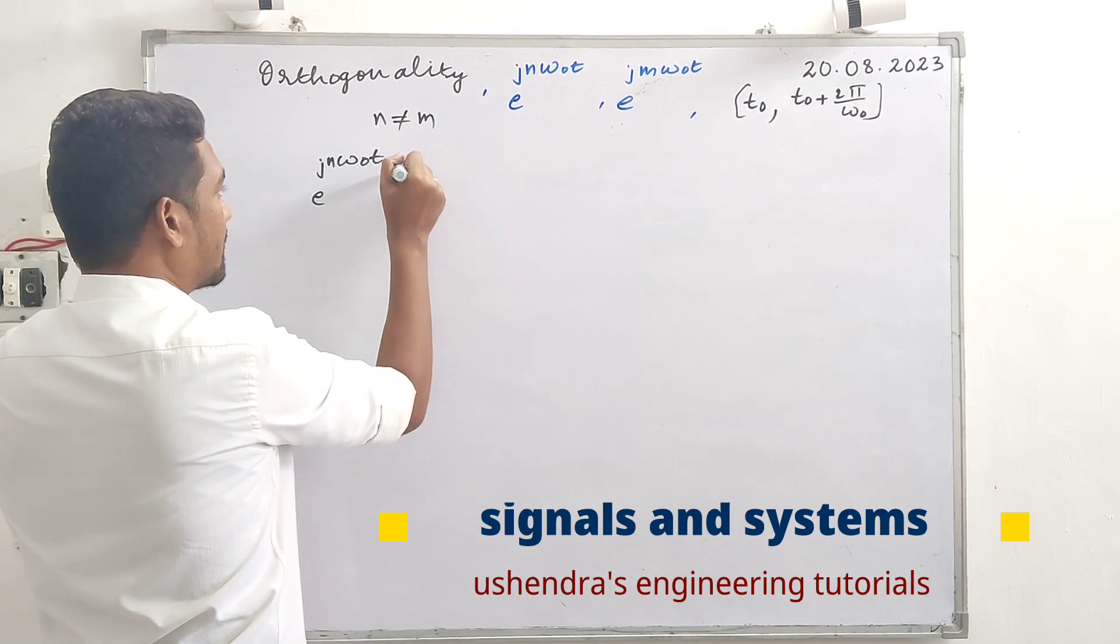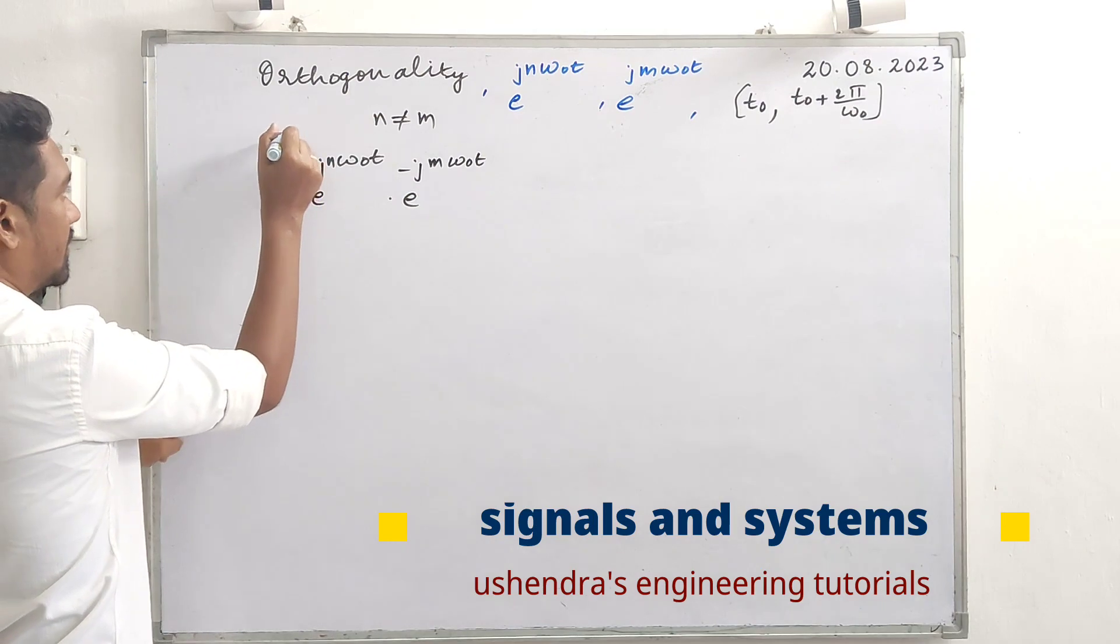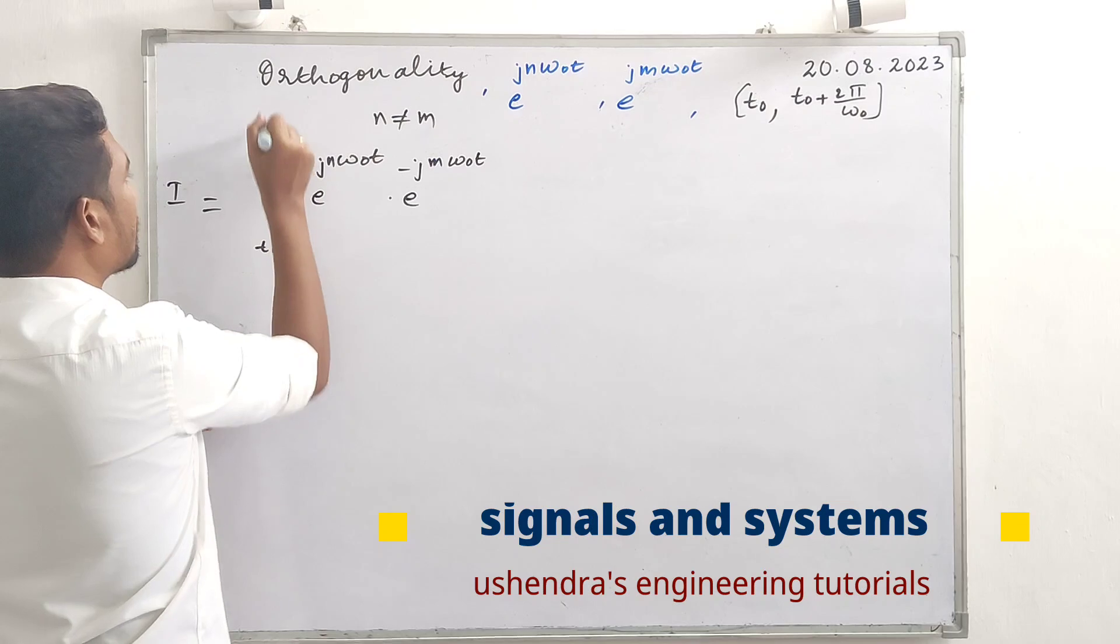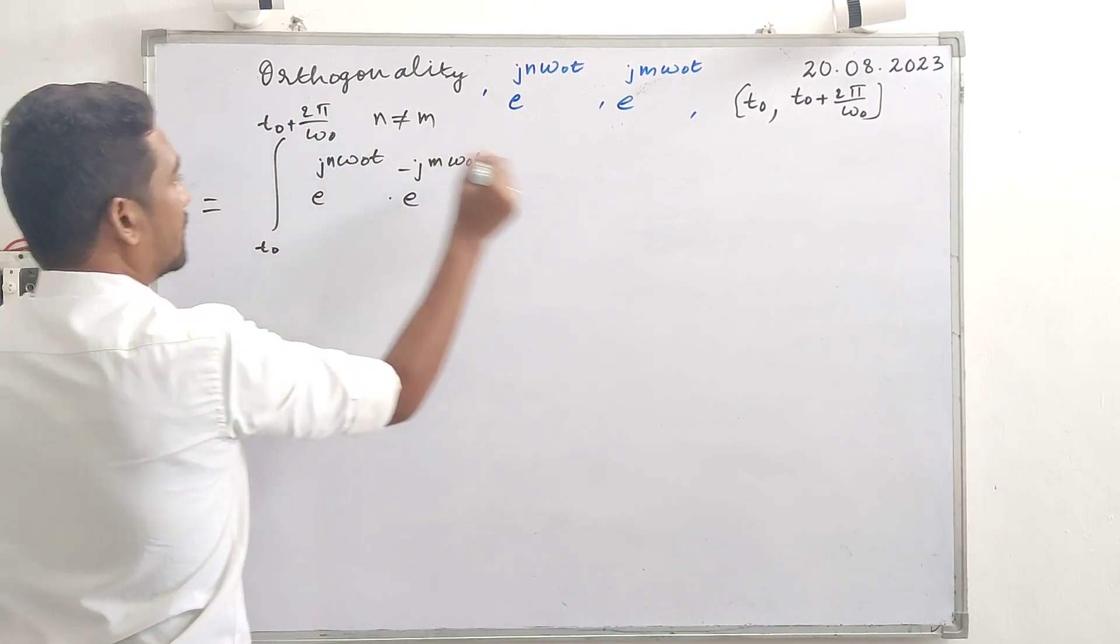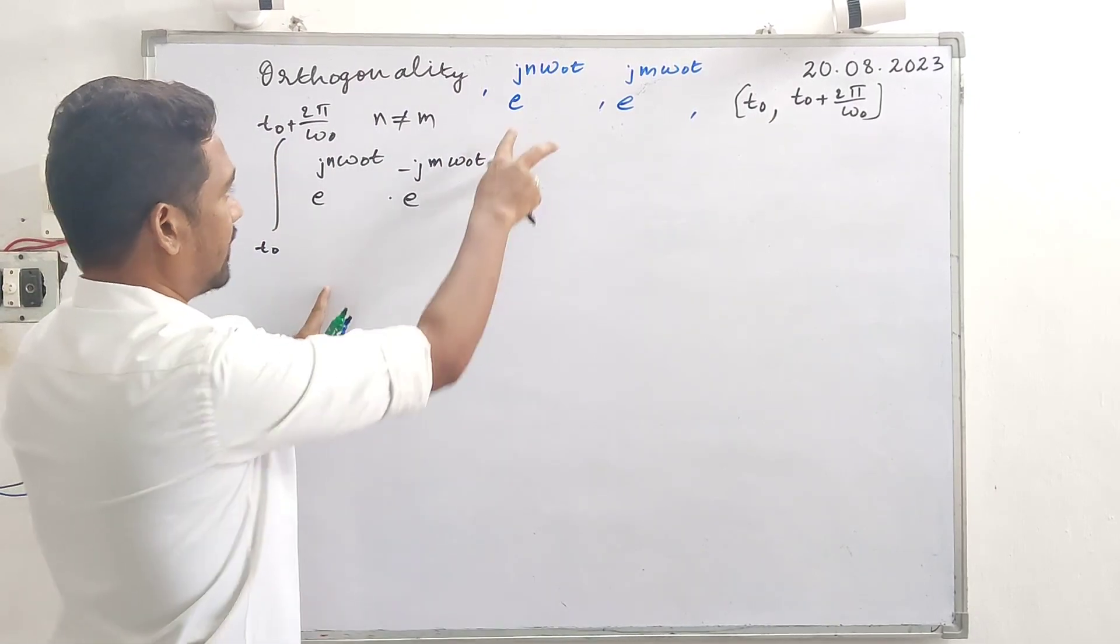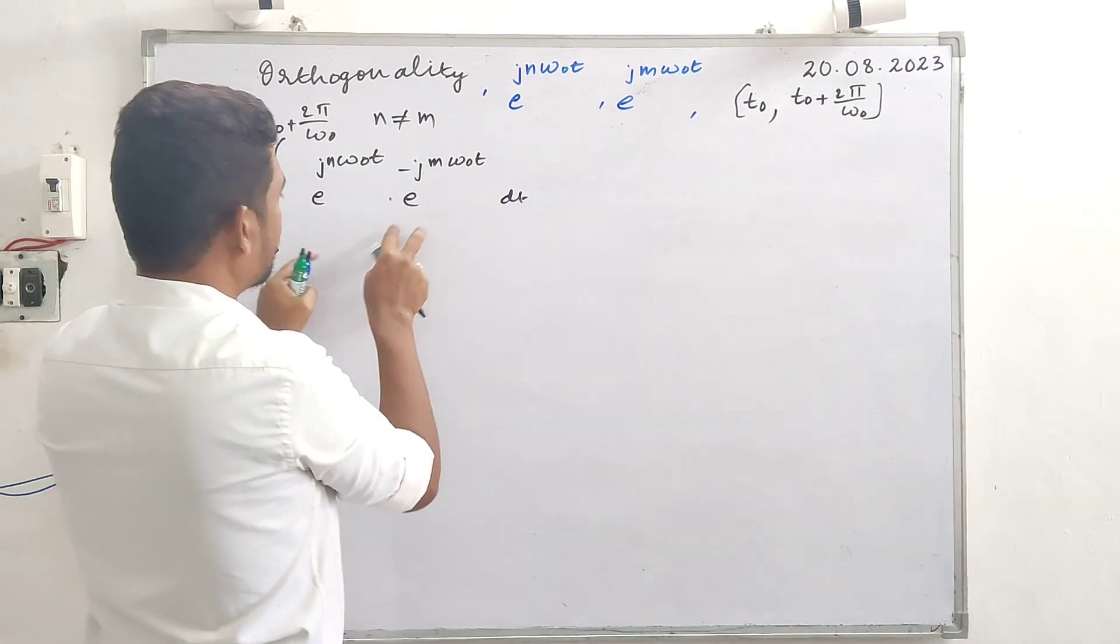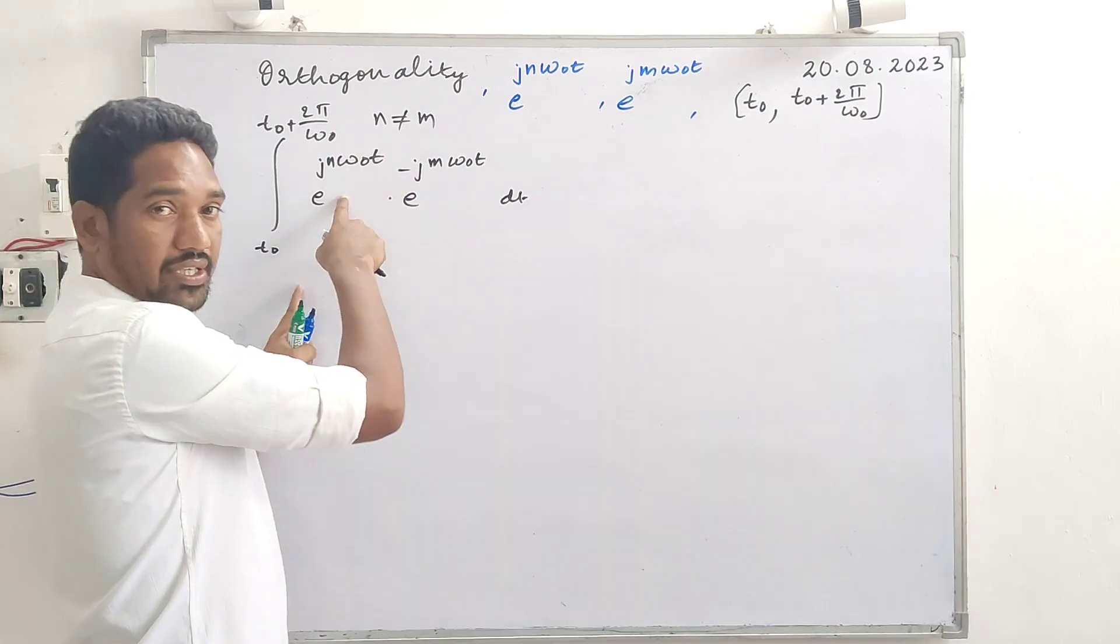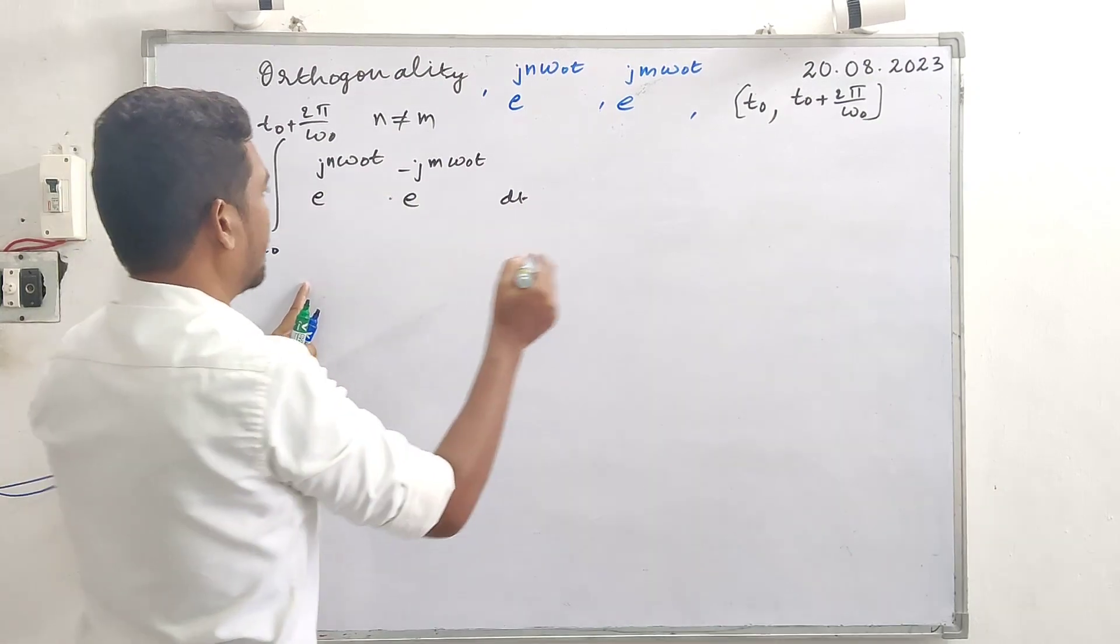The integral is equal to between the time period t naught to t naught plus 2 pi by omega naught dt. The procedure: straightaway x1 x2 are multiplied, then integration. One function takes positive, the other negative - complex conjugate is taken.